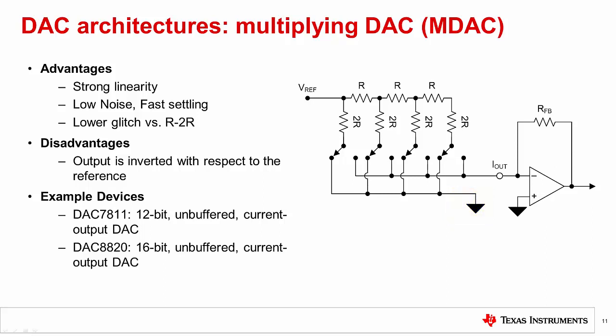MDACs have many advantages. They have the same strong linearity specifications as an R2R DAC, they are generally low noise, they have fast settling, and have lower glitch for an R2R as well. The primary disadvantage is that the output will always be inverted with respect to the reference voltage. It will also require a transimpedance amplifier which can result in extra costs.